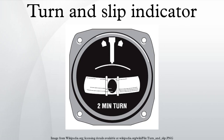Under instrument flight rules, using these figures allows a pilot to perform timed turns in order to conform with the required air traffic patterns. For a change of heading of 90 degrees, a turn lasting 30 seconds would be required to perform a standard rate or Rate 1 turn.